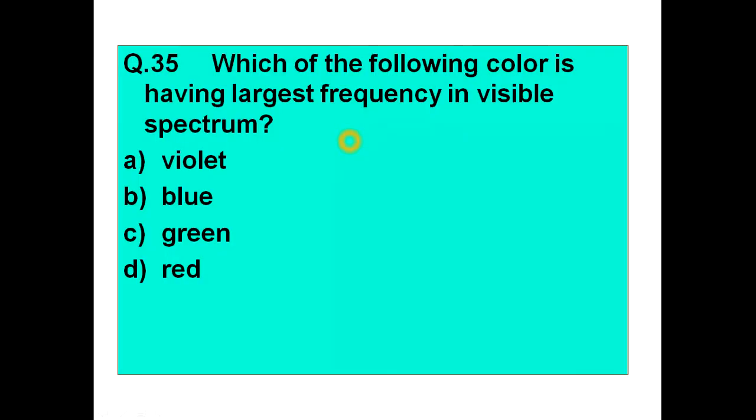Question number 35: Which of the following color is having the largest frequency in visible spectrum? Option A: violet, Option B: blue, Option C: green, Option D: red. This is a very important question. I think everyone in this field of image processing should know. What is the answer? The largest frequency in visible spectrum. The answer is violet. Violet has the largest frequency in visible spectrum.